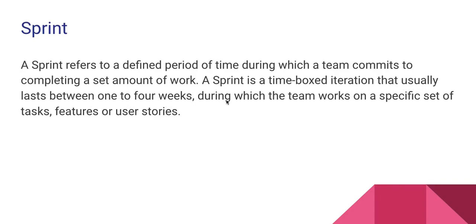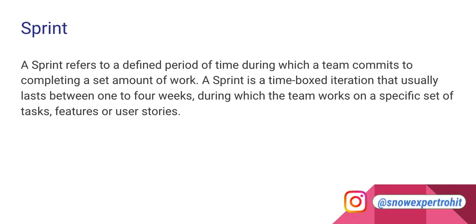During a sprint, the team works on a specific set of tasks, features, or user stories. Basically, a sprint is a duration - two weeks, three weeks, or four weeks - within which we decide which stories or enhancements we are going to complete. As a developer, you have to complete the assigned stories within that time frame. I'll go to the Jira board now and show you how this works.